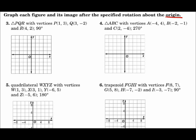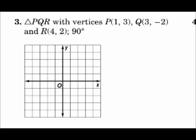Graph each figure and its image after the specified rotation about the origin. Notice we're rotating about the origin, so that will be our reference point for each piece that we rotate. We have triangle PQR with vertices P(1, 3), Q(3, -2), and R(4, 2), and we will rotate it 90 degrees. Let's start by drawing the first triangle — I'll draw the pre-image in blue.